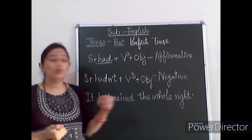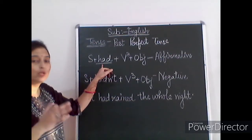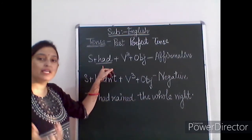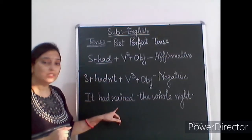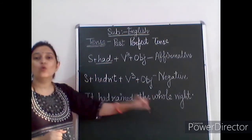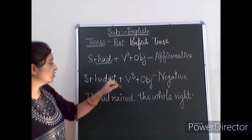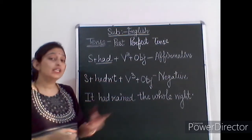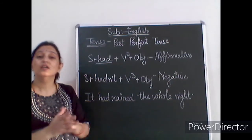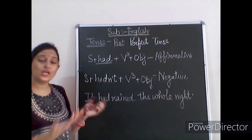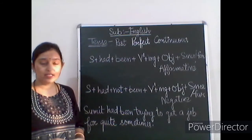Example: 'It had rained the whole night.' Here 'it' is the subject, 'had' is the helping verb — we write 'had' regardless of singular or plural — and 'rained' is the third form of 'rain.' Negative: 'It had not rained the whole night.' Just add 'not' between the helping verb and the main verb.